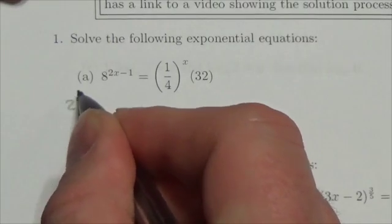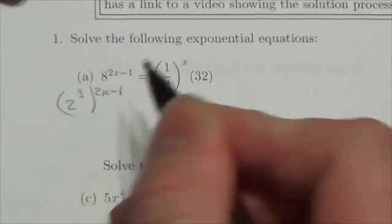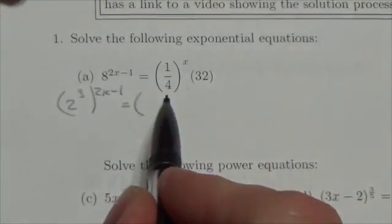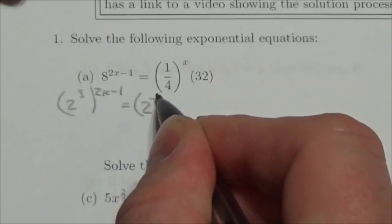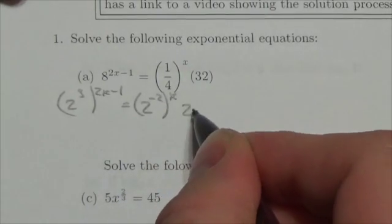So 8 is going to be 2 cubed. So this will be 2 cubed to the 2x minus 1. 1 over 4 is the same as 2 to the negative 2, and that is still to the x. And 32 is going to be 2 to the 5.